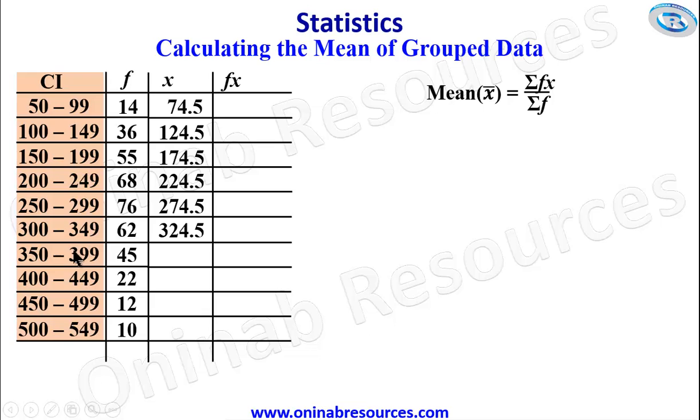250 plus 299 divided by 2 gives 274.5, 300 plus 349 divided by 2 gives 324.5. Remember we are not subtracting, we are adding the lower class interval plus the upper class interval and divide by 2. So 350 plus 399 divided by 2 gives 374.5, 400 plus 449 divided by 2 gives 424.5, 450 plus 499 divided by 2 gives 474.5, 500 plus 549 divided by 2 gives 524.5.